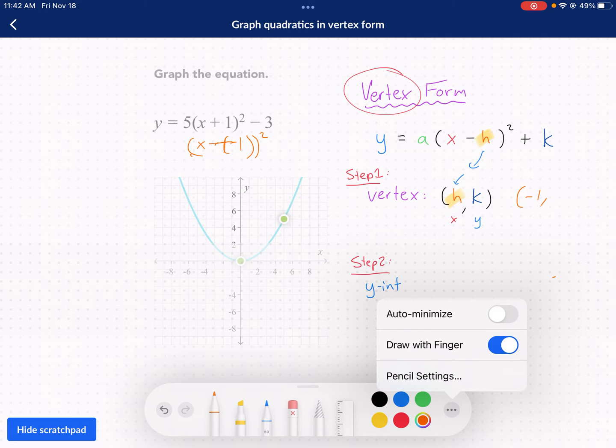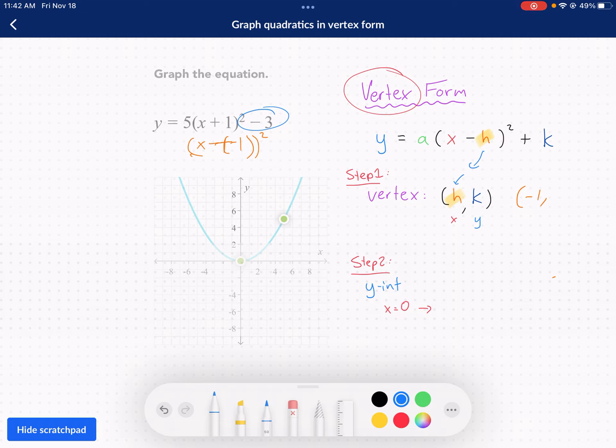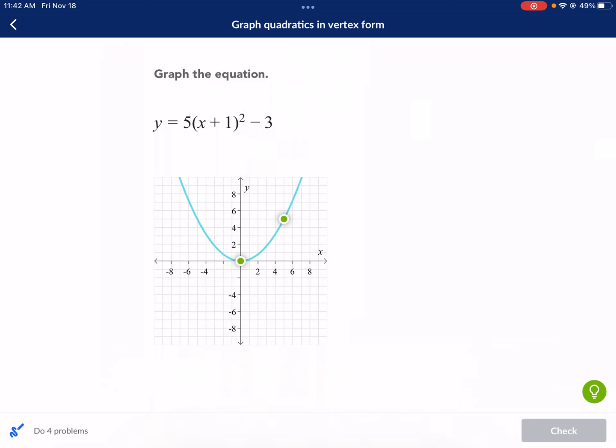Now here, this is what causes a lot of confusion, is when the students take a look at this minus 3, they go, oh, the opposite. No, for k, for the y-coordinate vertex, it's the same. So we're going to put minus 3 for the y-coordinate of the vertex. So this vertex is at negative 1, negative 3. That's how we find the vertex. That's the most important point. So we're going to go negative 1 and then negative 3, and that's where our vertex is.